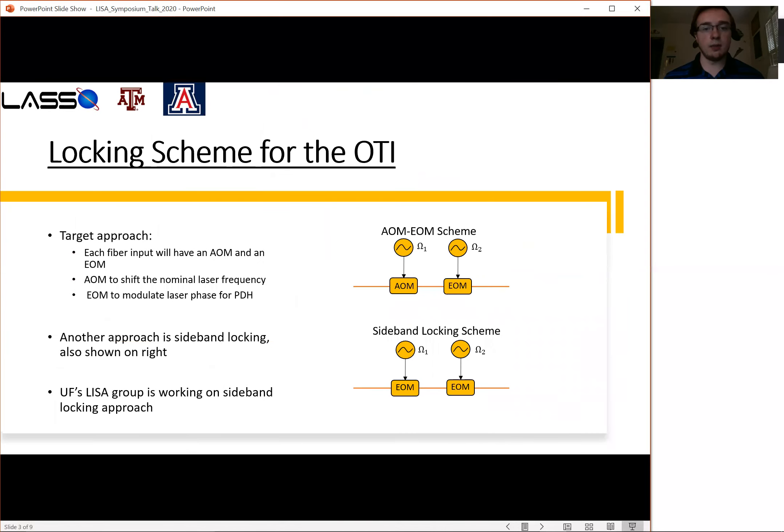Now the locking scheme for the OTI - we have two target approaches for this. We don't want to use three lasers for each of the three cavities on the telescope, and one way that we can use just a single laser source is by sending a pre-stabilized laser source coupling it into three different branches. Each of these branches has an AOM and an EOM, the scheme of which is shown over here on the upper right. The AOM is used to shift the nominal laser frequency and we can tune this frequency omega-1 in order to tune to the cavity resonance. The EOM is used to phase modulate for PDH locking. A secondary approach which is being investigated currently by the University of Florida is sideband locking, which is a similar idea but a different approach.